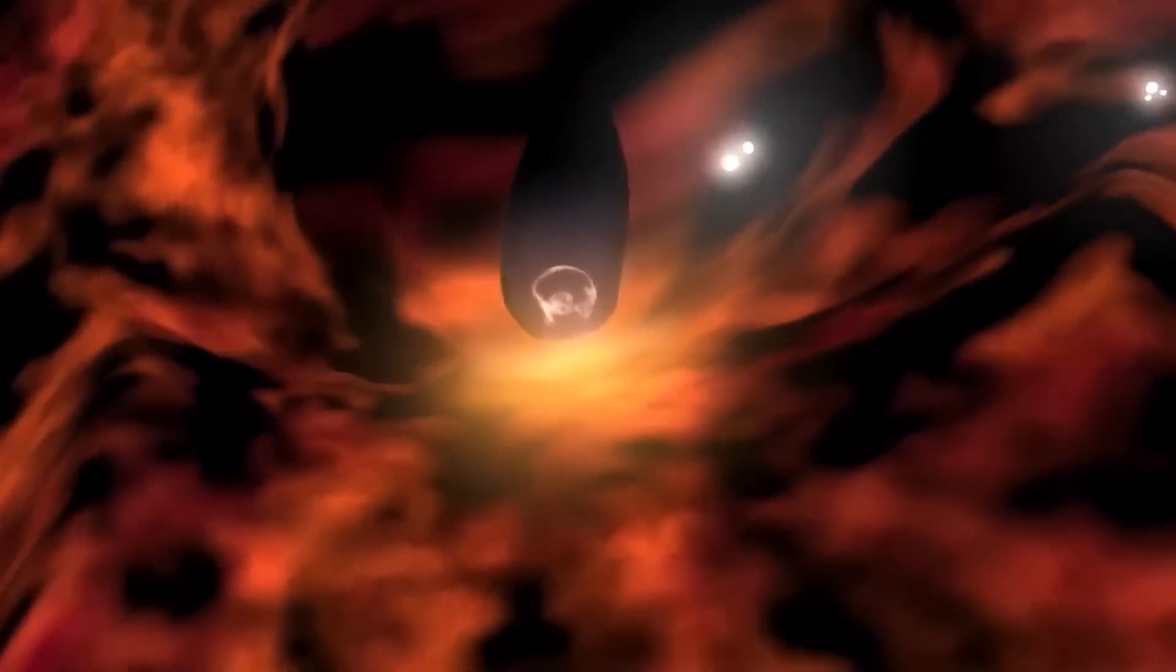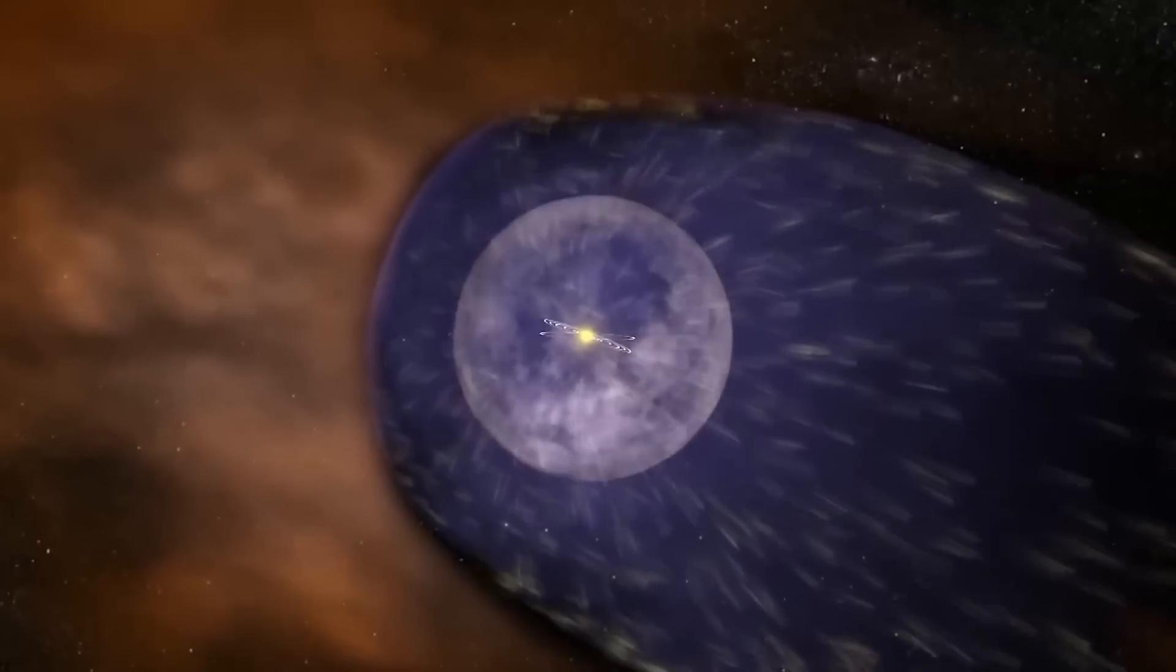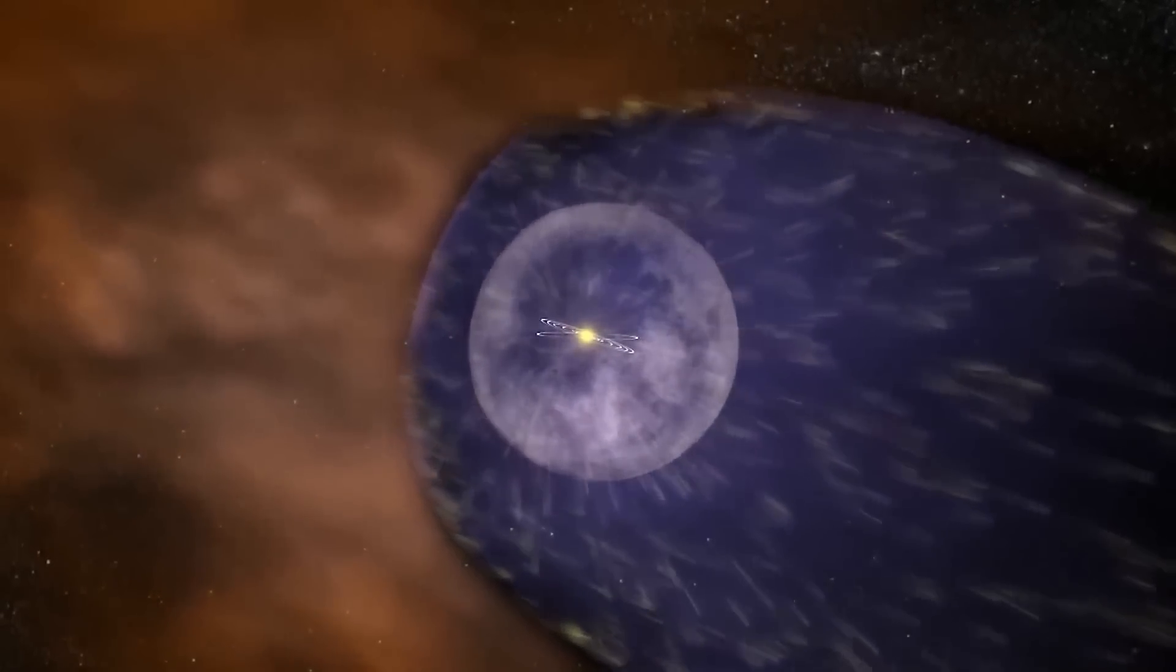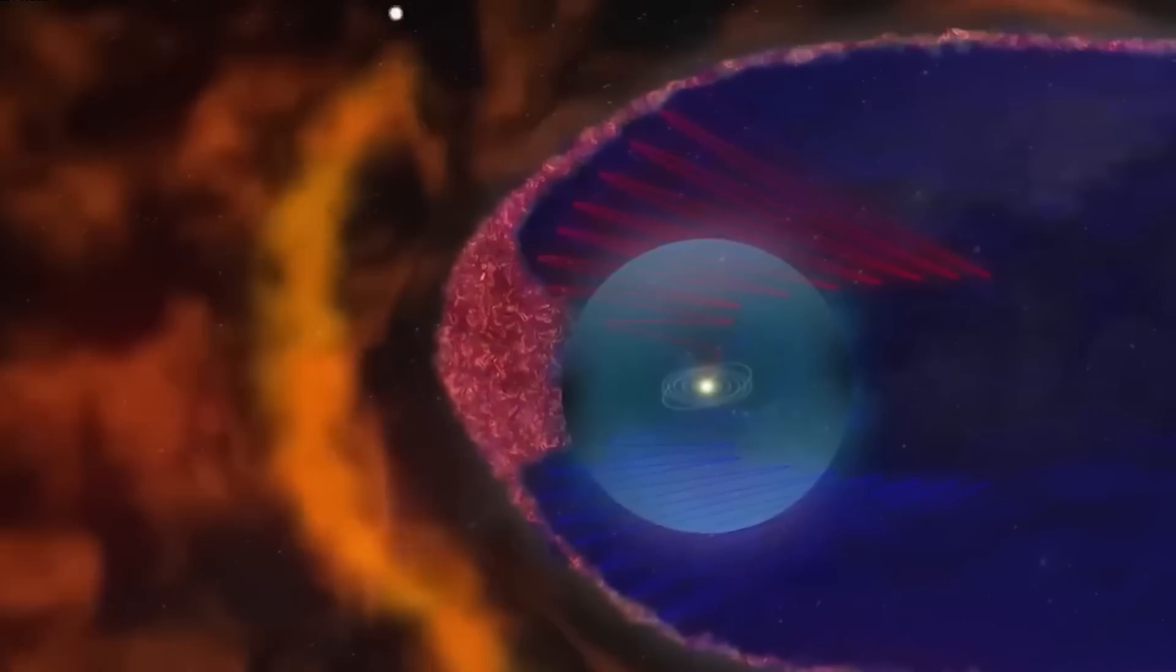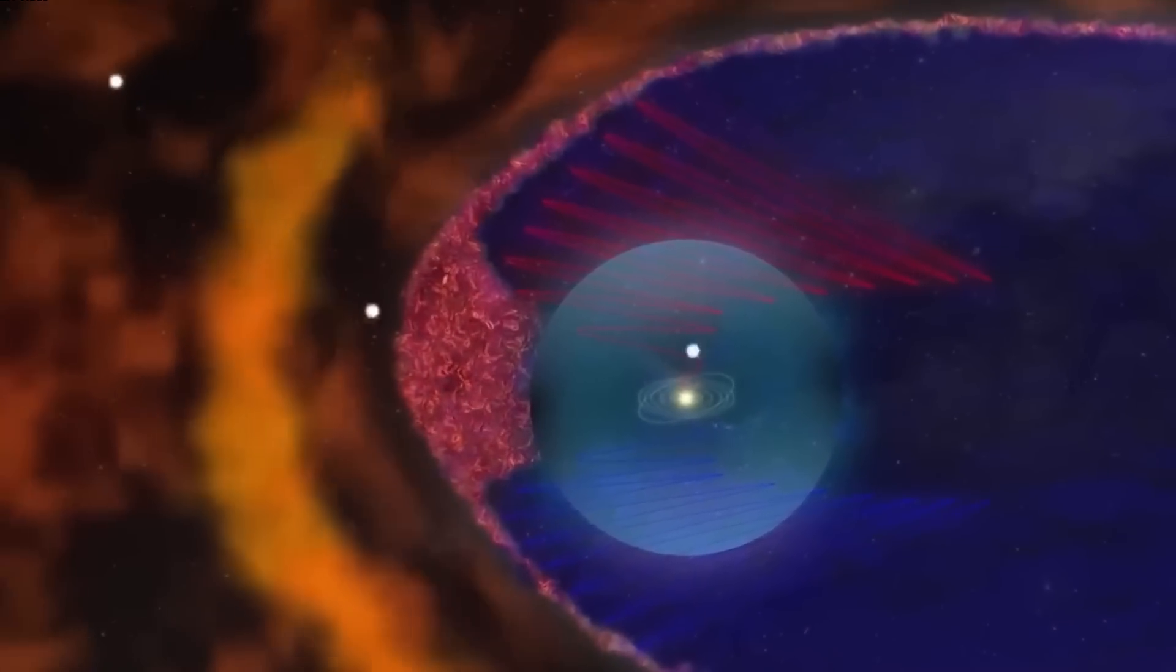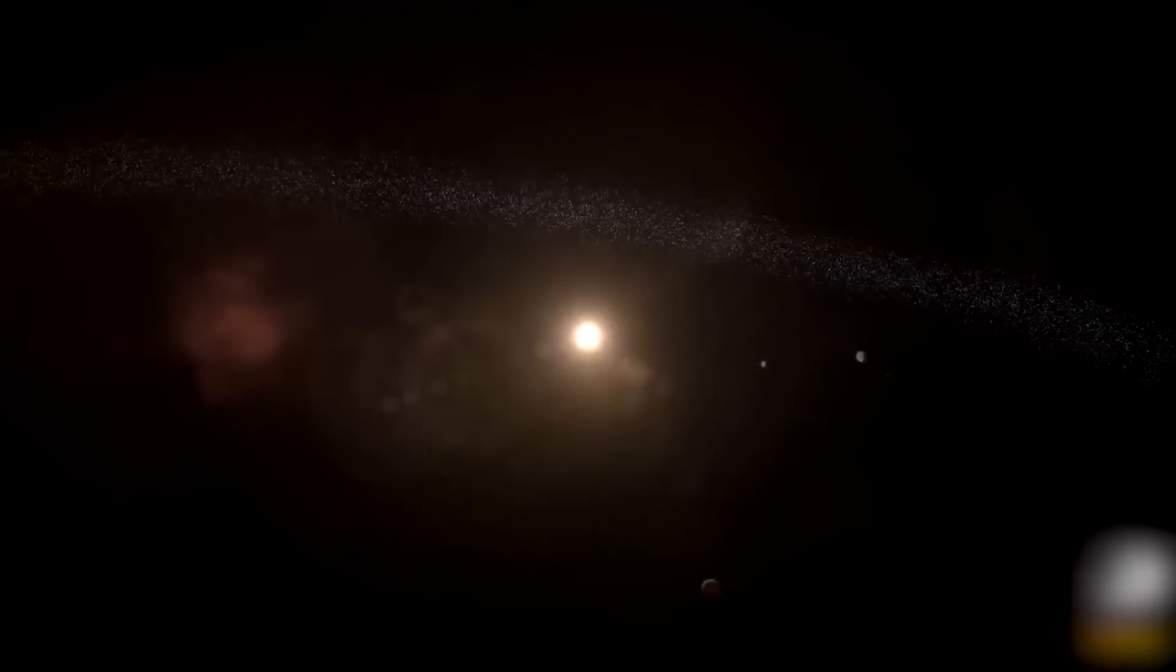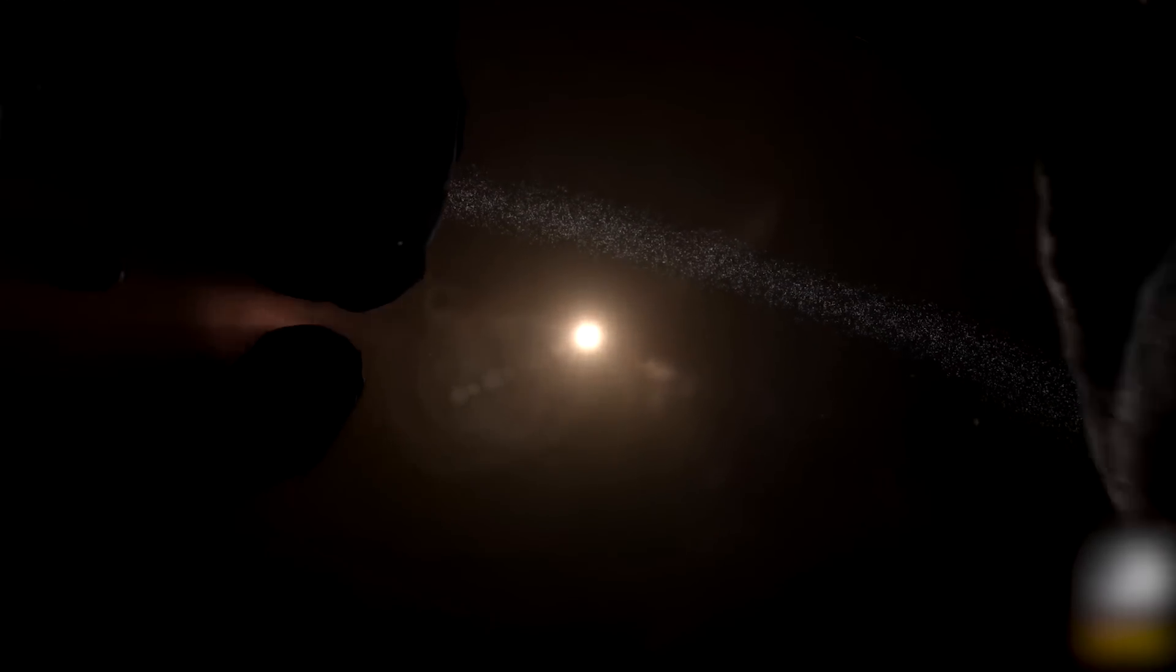Influenced by the interstellar gas wind caused by the Sun's motion through space. As the Sun travels, it creates a magnetic bubble, or foam, within this boundary, shaping the outermost region of the heliosphere, which is influenced by the Sun's magnetic field and energetic particles. This magnetic foam contributes to the intricate structure and behavior of the heliopause.